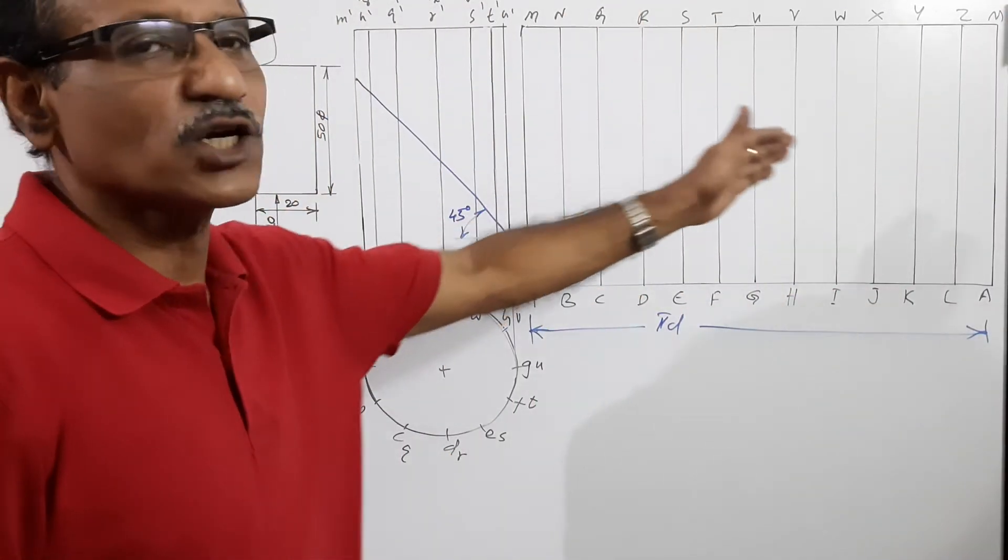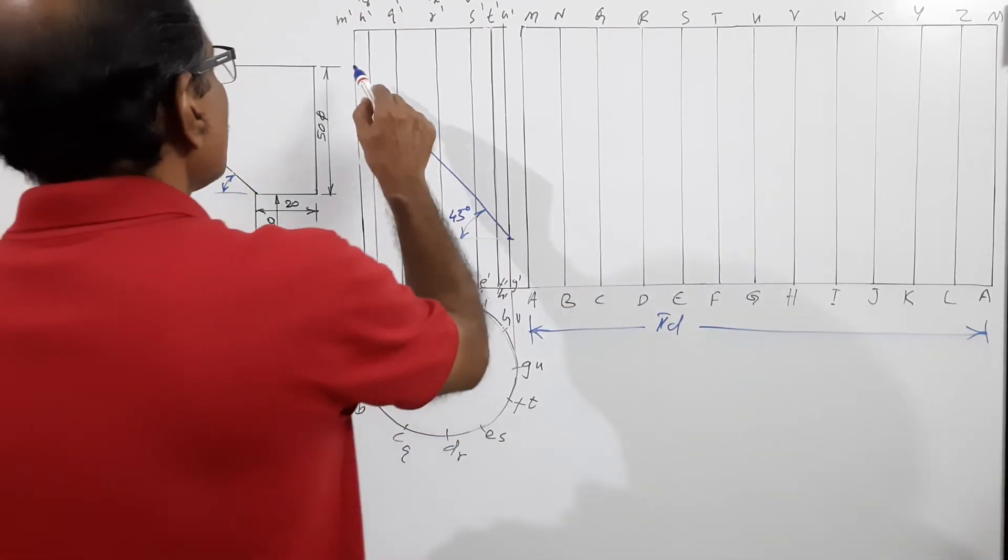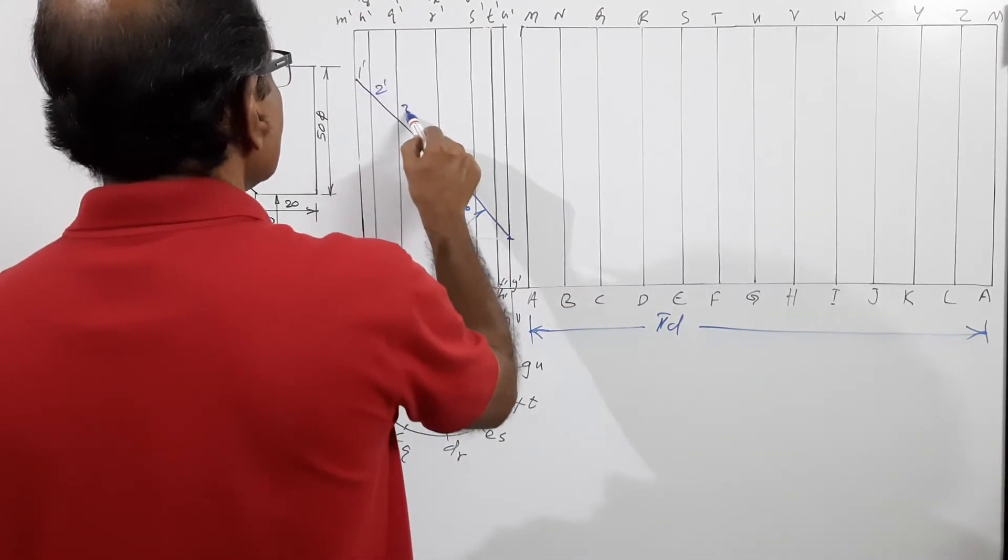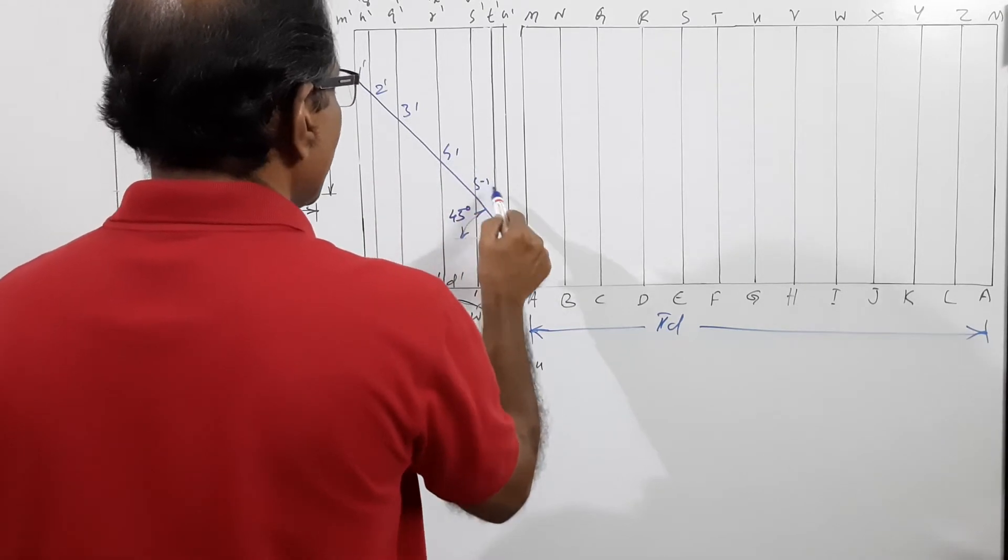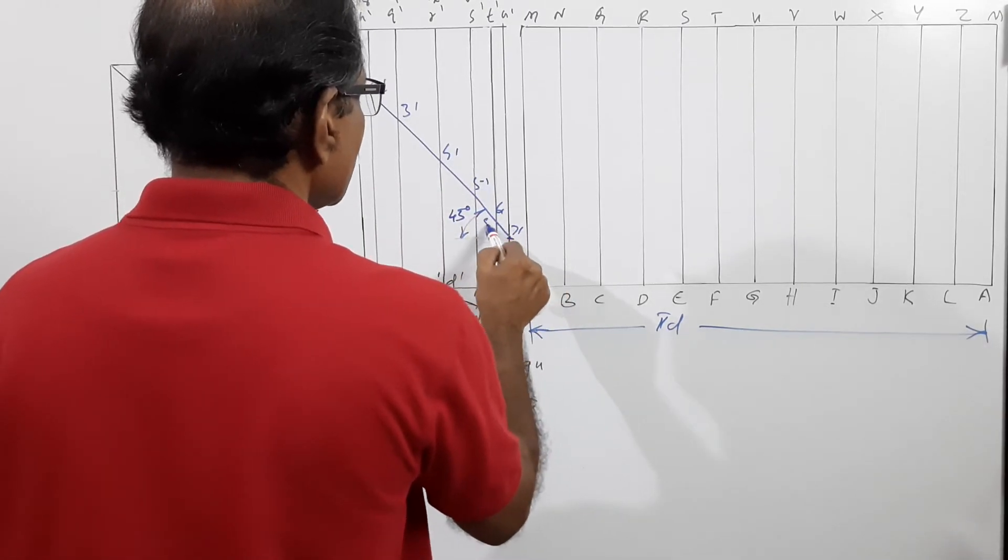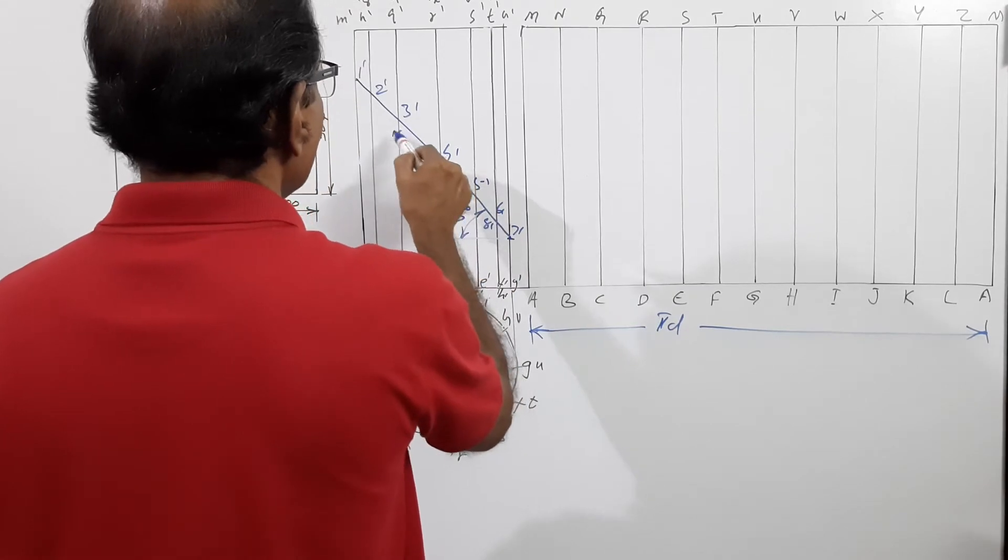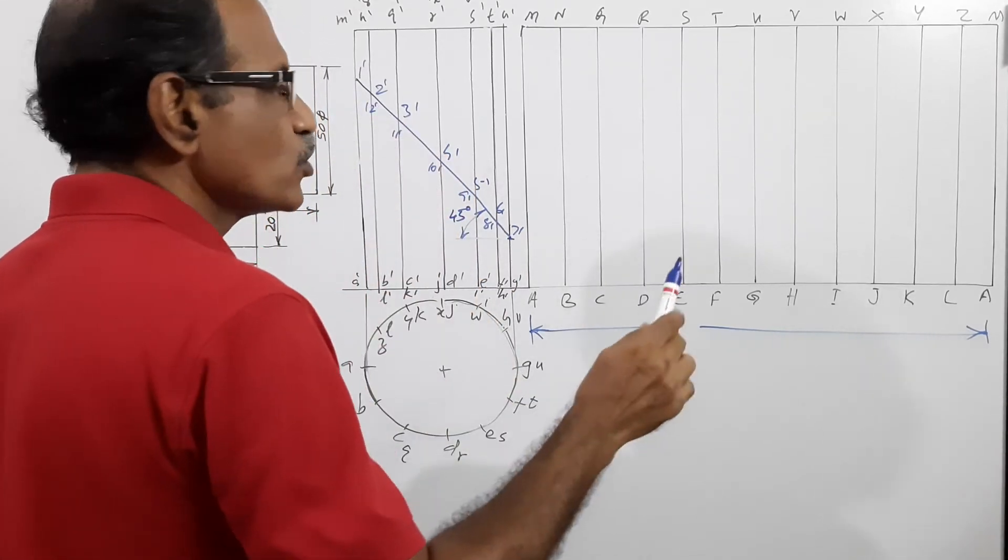Now these points have to be brought on to this development. This is 1 dash, 2 dash, 3 dash, 4 dash, 5 dash, 6 dash, 7 dash, 8 dash, 9 dash, 10 dash, 11 dash, 12 dash. How do you draw the development?